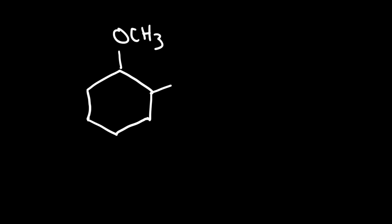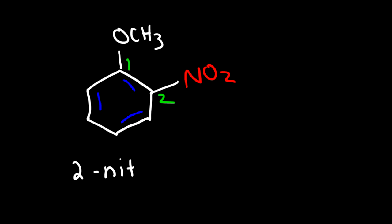What if we have an OCH3 group and at the same time an NO2 group on a benzene ring? The NO2 group is called nitro, and a benzene ring with an OCH3 group is called anisole — so the parent name is anisole. The nitro group is on carbon 2, so we can call this 2-nitroanisole, or ortho-nitroanisole.